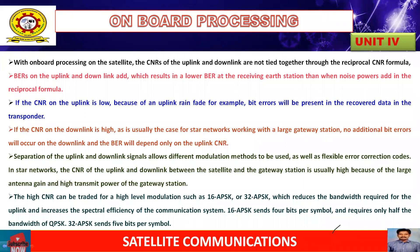When the CNR value is very high, various network topologies are implemented for the large gateway station. While implementing these values, we require separation of uplink and downlink signals, which allows various different modulation methods to be employed on this onboard technique, enabling error correction codes to be obtained in prior order. There are various mesh topologies available in regular communication satellite systems. If store topologies are implemented, the uplink and downlink between satellites and the gateway station are configured accordingly.